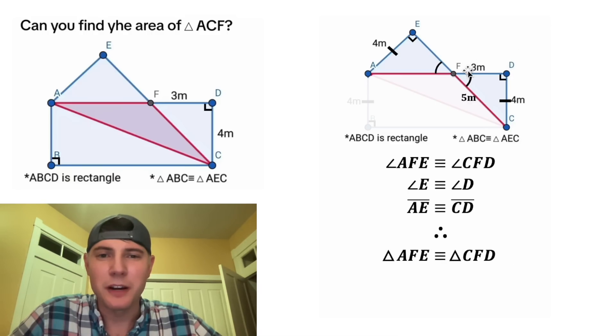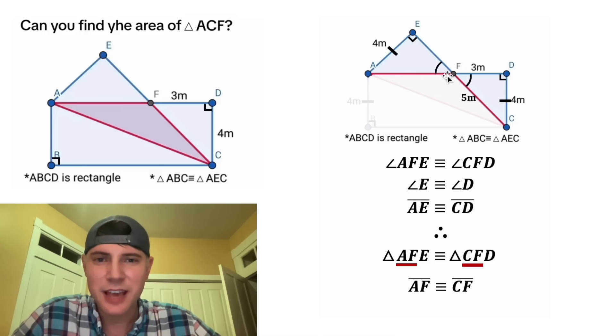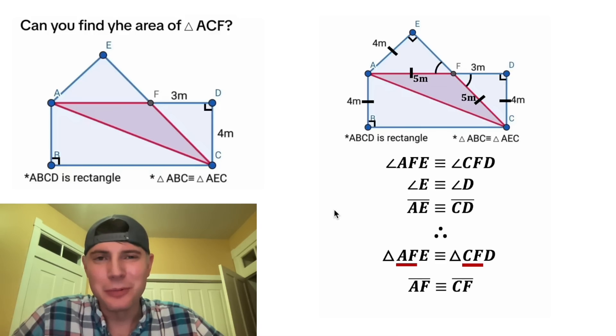Any two triangles where you have a corresponding angle, angle, and a side, those two triangles have to be congruent. And now we have another congruent statement. So looking at these first two letters and these first two letters, we know segment AF equals segment CF. That means this AF equals this CF. And since we know CF is 5, that means we know this is 5. And now we're pretty much done.